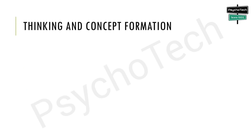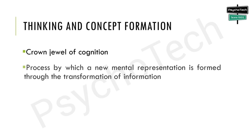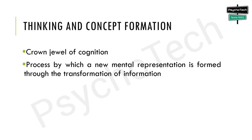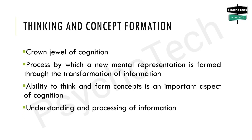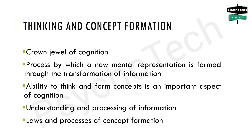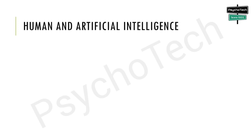The next area is thinking and concept formation. Thinking is considered the crown jewel of cognition — it is the process by which a new mental representation is formed through the transformation of information. Advances in cognitive psychology have led to a formidable arsenal of research techniques and theoretical models. The ability to think and form concepts is an important aspect of cognition; similar concepts help in the understanding and processing of information, and there is a considerable body of knowledge about the laws and processes of concept formation.